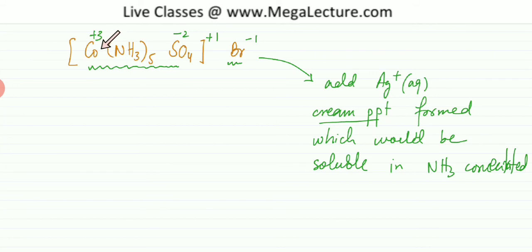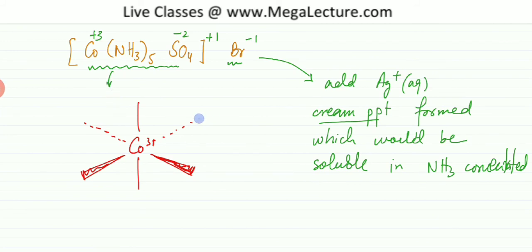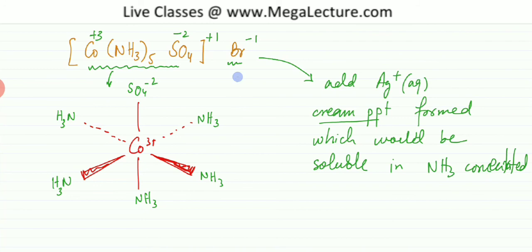Things bonded to cobalt will not break away. This is also an octahedral complex. There are five NH3s and one SO4 minus 2 directly bonded. The five NH3s with their lone pairs and the SO4 minus 2 with its lone pairs are all attracted to the cobalt ion. The overall complex ion has a charge of plus 1, and Br minus 1 is attracted to it externally, dissociating in water to give a positive result.